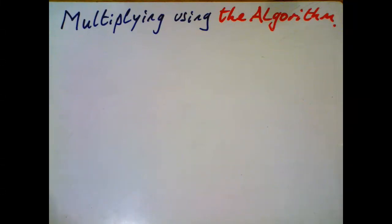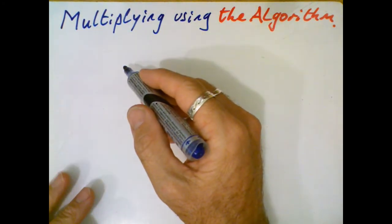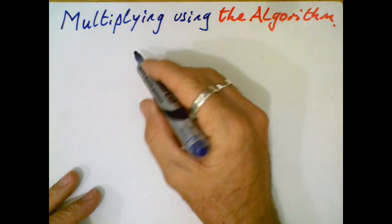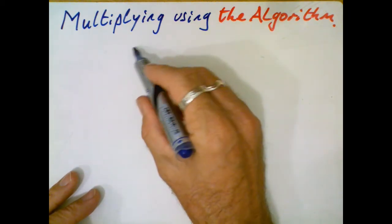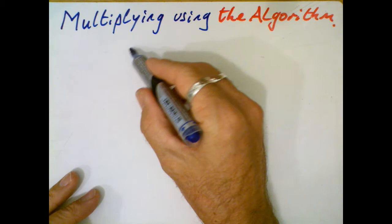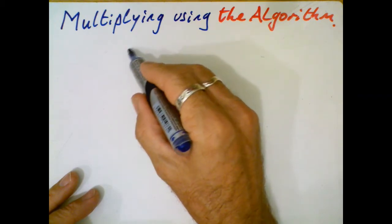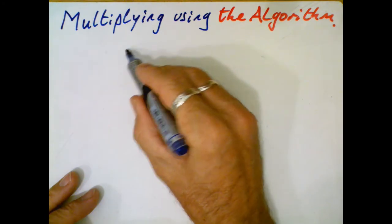Welcome back to Mr.NatsMaths and today we're going to look at using the algorithm for multiplication. I hope you've watched all my other videos and you've understood lots about multiplication and you've got lots of good number facts in your brain and you can manipulate numbers in lots of different ways. But if you want a quick way and you've got a pen and paper and you want to write it down, then maybe the algorithm is for you.